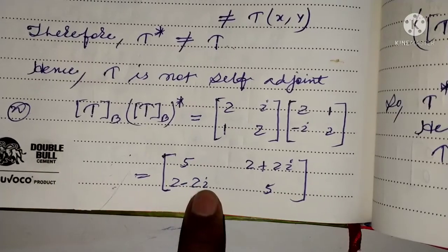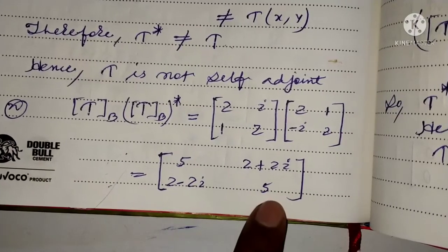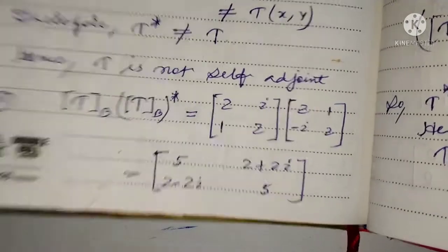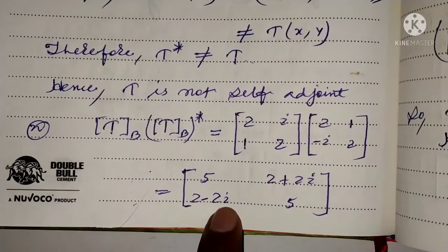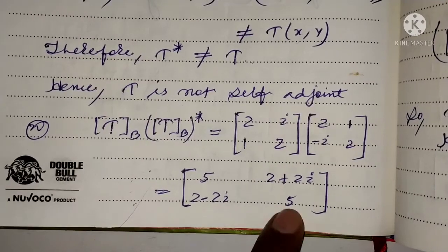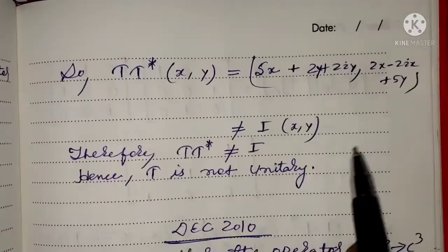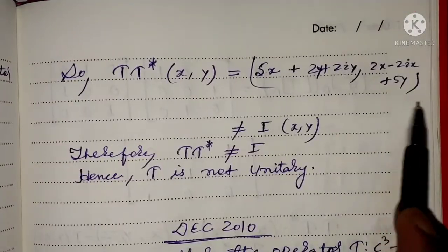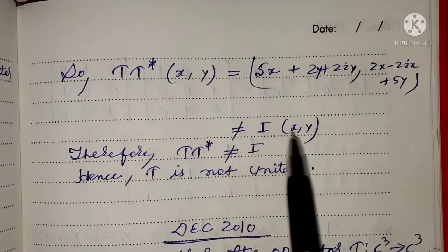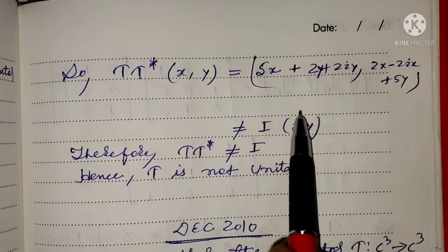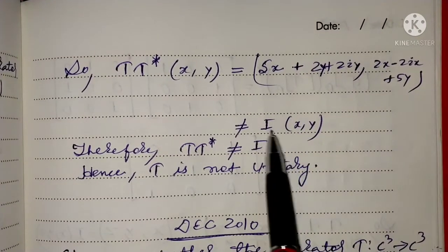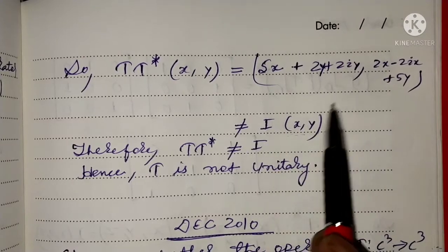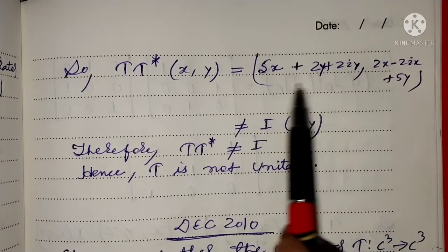We get (2x - 2iy + 5y) in the second component. So we see that T·t*(x, y) is not equal to (x, y).